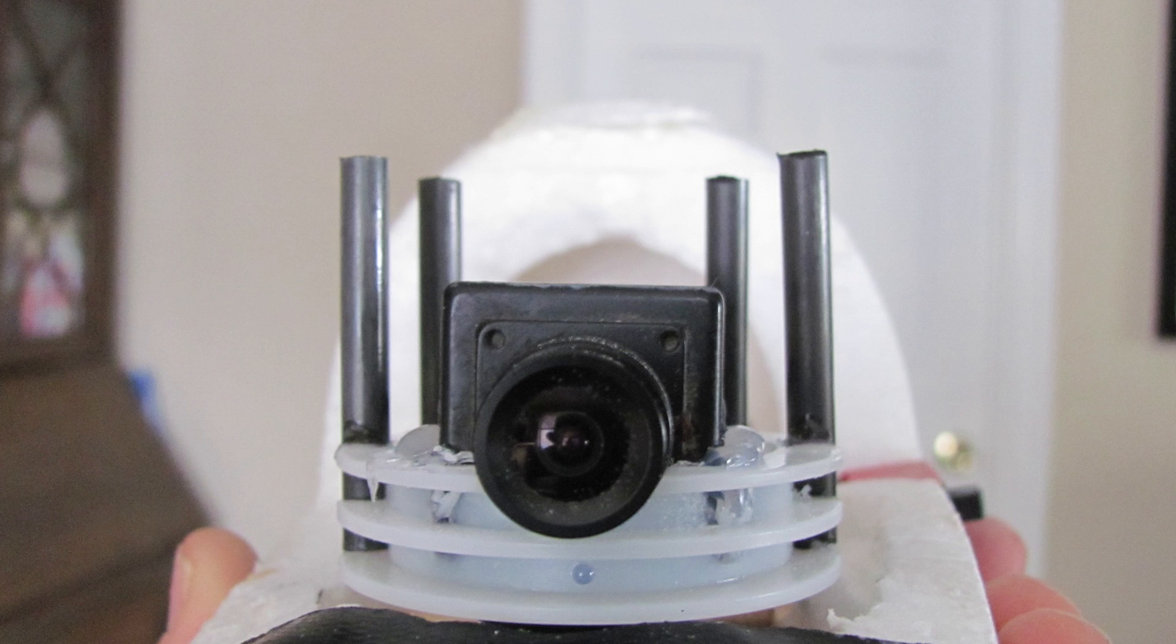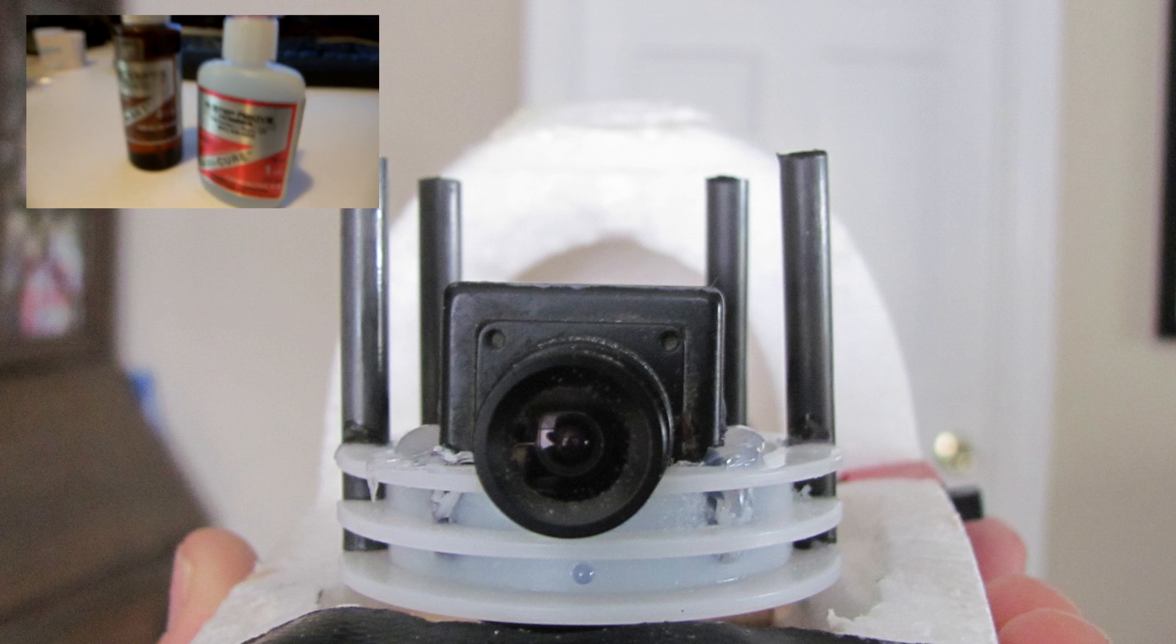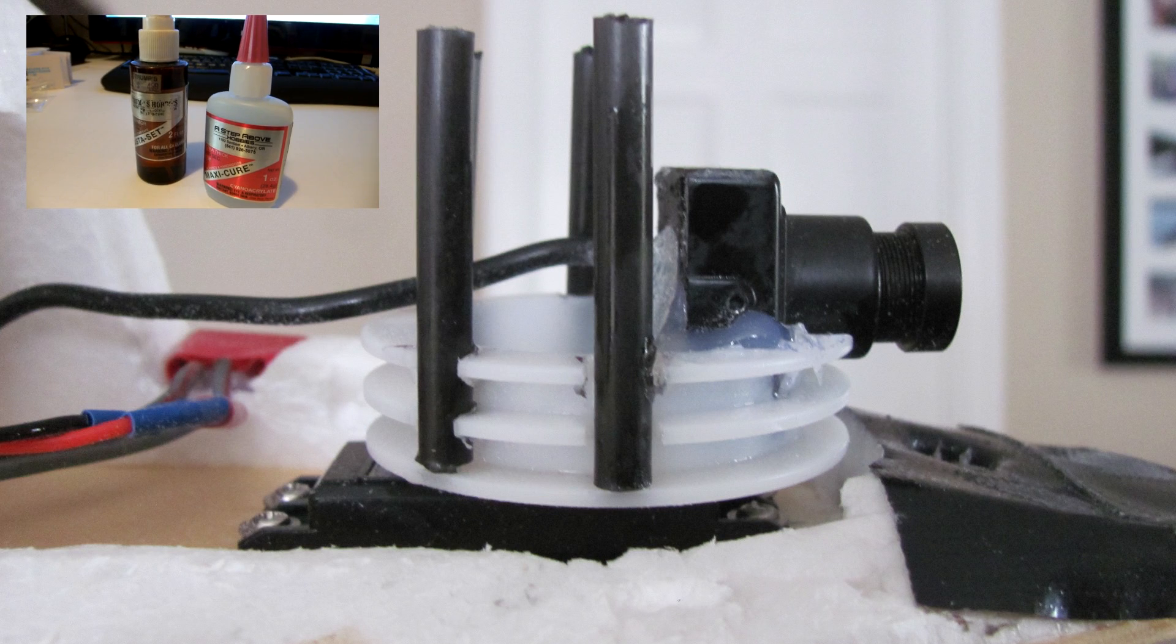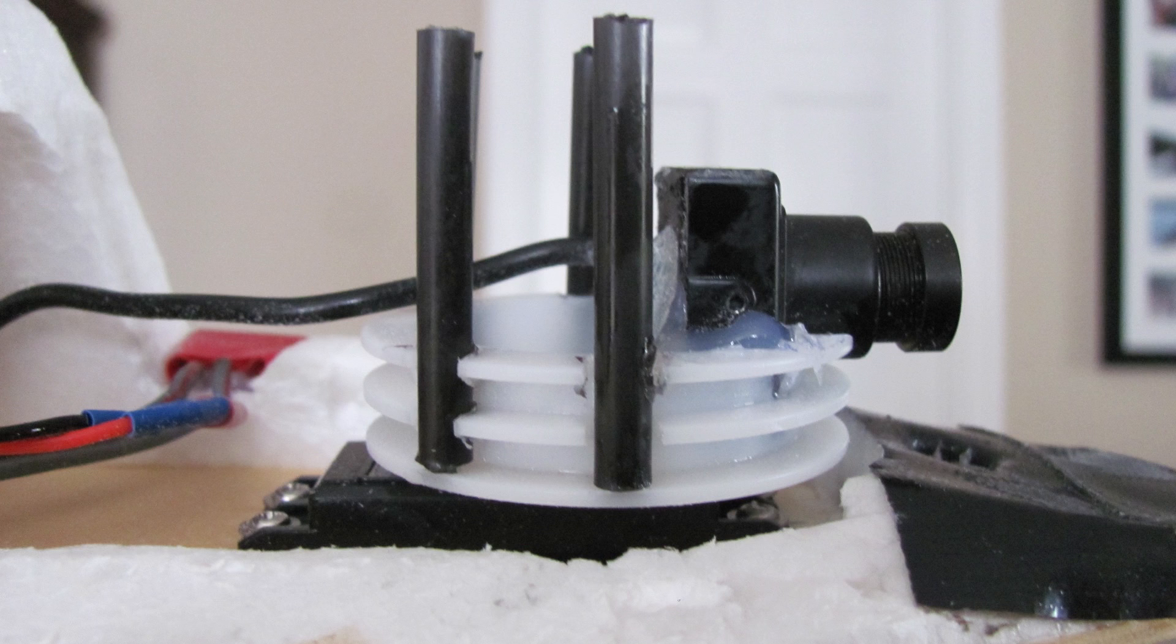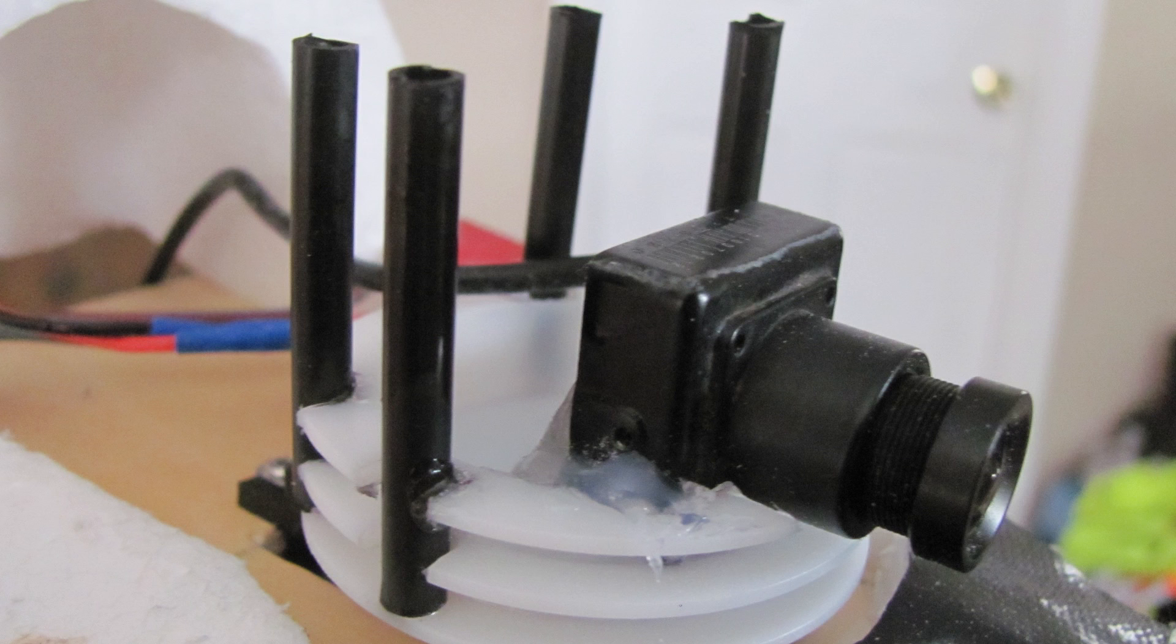Tack glue each riser in place with just a little bit of super glue and accelerator. At this point, it is important to have all the risers in place vertically and aligned with one another. This is why we're tack gluing it first so we can see the alignment and make any adjustments. When they are lightly glued, if we make a mistake, all we do is just pop it loose and try again.